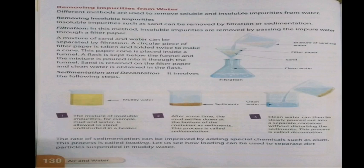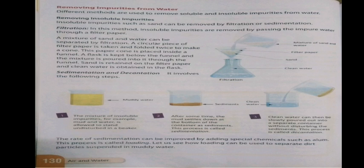Different methods are used to remove soluble and insoluble impurities from water. For insoluble impurities such as sand, we use filtration or sedimentation. In the filtration method, insoluble impurities are removed by passing impure water through a filter paper. A mixture of sand and water can be separated this way.